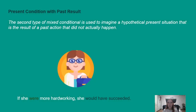Present condition with past result. The second type of mixed conditional is used to imagine a hypothetical present situation that is the result of a past action that did not actually happen. For example: 'If she were more hard working, she would have succeeded.'